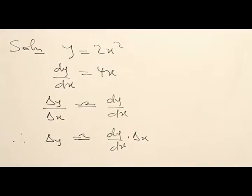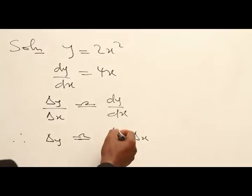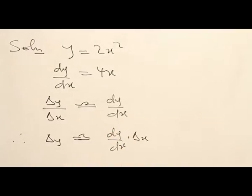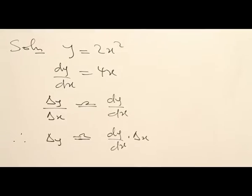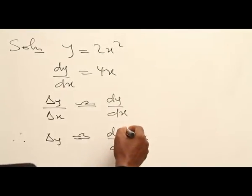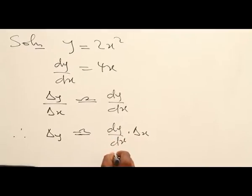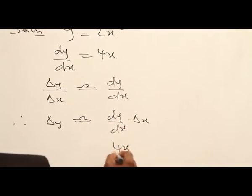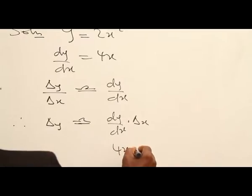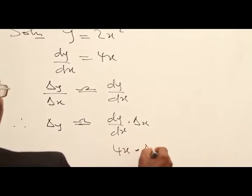So, our ΔY over ΔS is evaluated at the point where S was 5. This will be evaluated as 4S multiplied by ΔS.